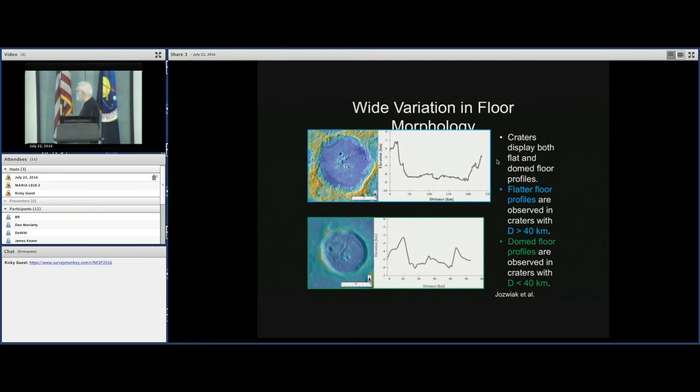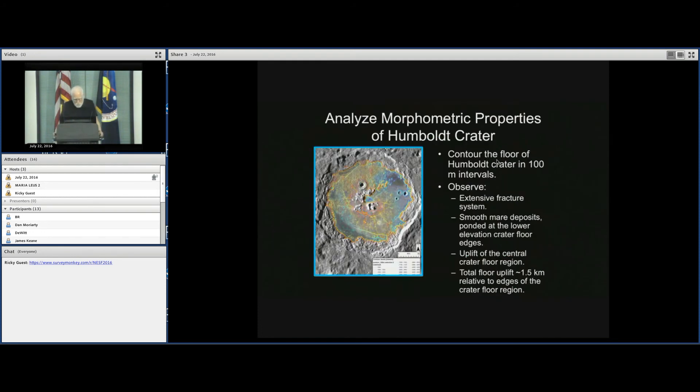There's a wide variation in floor morphology. And again, that's the subclasses that you see. But one of the classic differences is you get both domed flat floors and flat floors. So this is generally a flat floor. This is a domed floor. And clearly, flatter floor profiles are observed in craters that have diameters less than 40 kilometers, as you can see here. Whereas the dome floor profiles, the uplifted flat floor craters are in those increased with diameters greater than 40 kilometers. So that's a fundamental difference here.